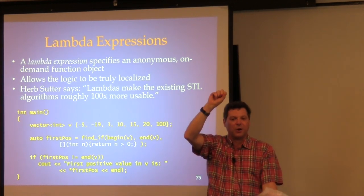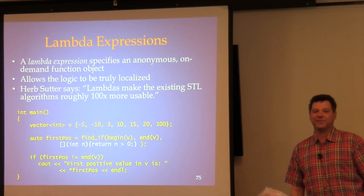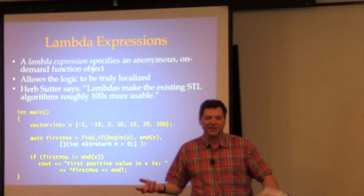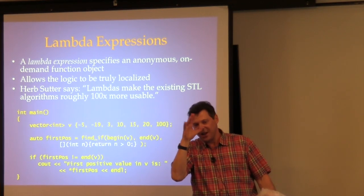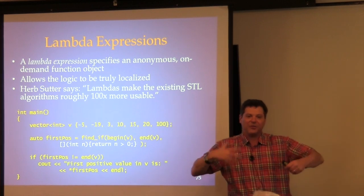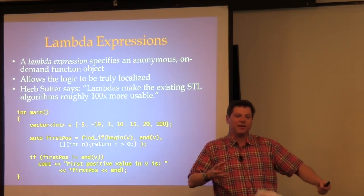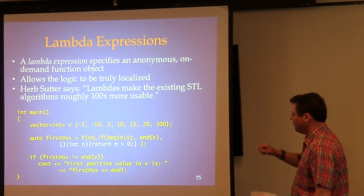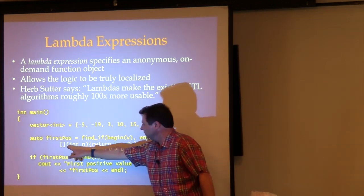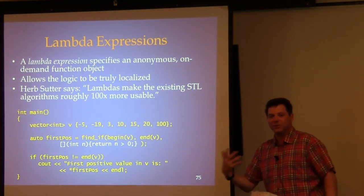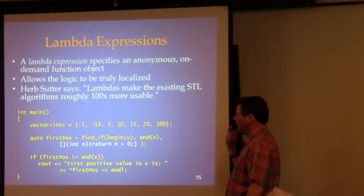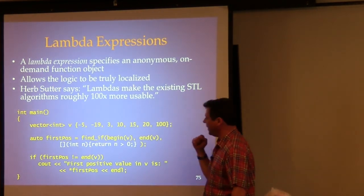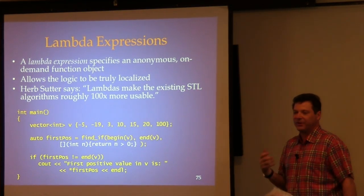Here's a simple lambda. The open-close square brackets introduce the lambda syntax, followed by the parameter list and the body — just like a function definition. There's no declaration of the return type; the compiler figures it out from the expression. As Herb Sutter said, lambdas make the existing STL algorithms roughly 100 times more usable.